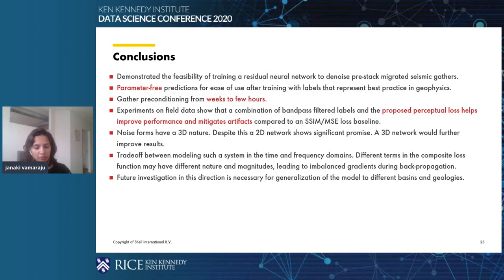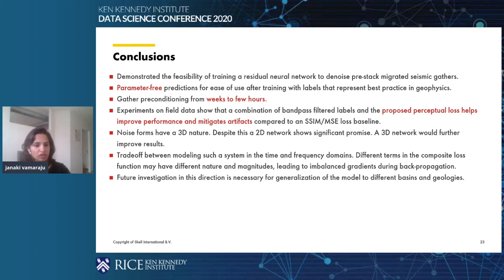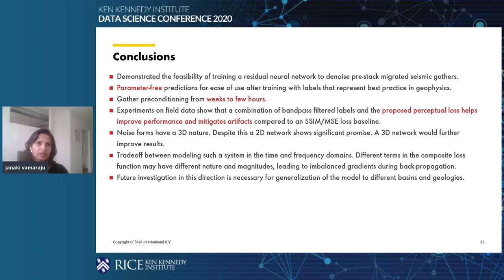To conclude, we demonstrated the feasibility of using a residual neural network to denoise pre-stack migrated seismic gathers. They have parameter-free predictions for ease of use after training with labels representing best practice workflows in geophysics. Gather preconditioning cycle time has been reduced from weeks to a few hours. Experiments on field data show that a combination of band-pass filtered labels and the proposed perceptual loss helps improve performance and mitigate artifacts. The noise also has a 3D nature; despite this, a 2D network shows significant promise. We are currently working on designing a 3D neural network to further improve results, and future investigation into loss function balancing is necessary for generalization to different basins and geologies.